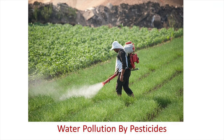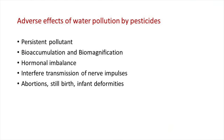Firstly we can discuss water pollution by pesticides. Pesticides are substances meant to control pests. There are different types: algicides which control algae, bactericides which control bacteria, fungicides which control fungi, herbicides which control plants, insecticides which control insects, and rodenticides which control rodents. This classification is based on the target organism. Examples of pesticides include DDT, lindane, malathion, parathion, chlordane, BHC, etc.